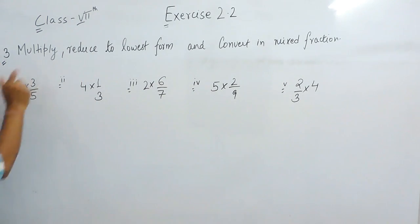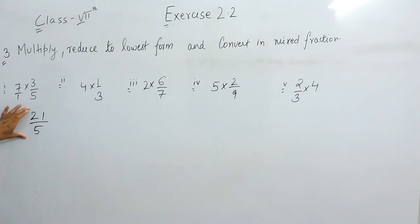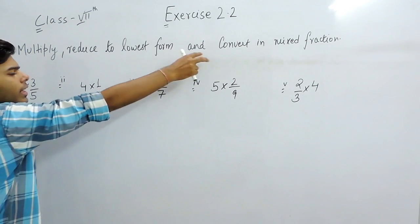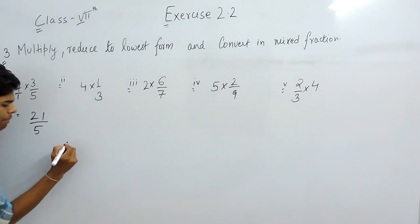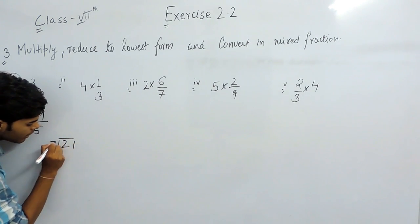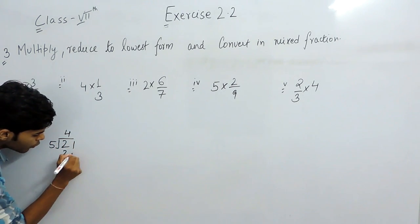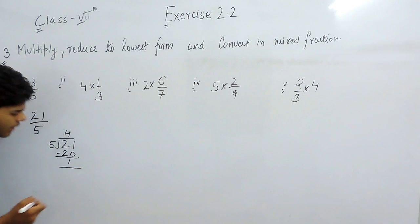So first of all we have to multiply these numbers, so we will multiply numerator with numerator and denominator with denominator. So 7 is the numerator and 3 is the numerator, so it will be 21 upon 5. Now it cannot be turned into its lowest form so then we will convert it in mixed fraction. This simply means 21 upon 5 means that 21 divided with 5, so 4 is the quotient, 20, and 1 is the remainder.